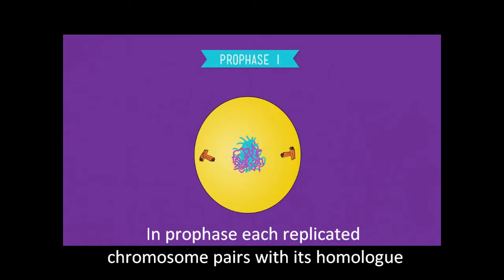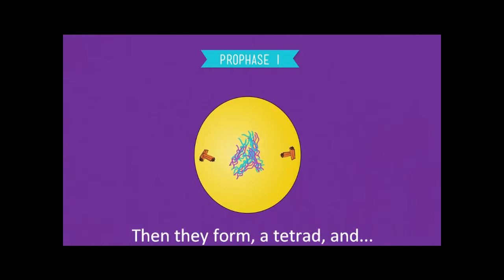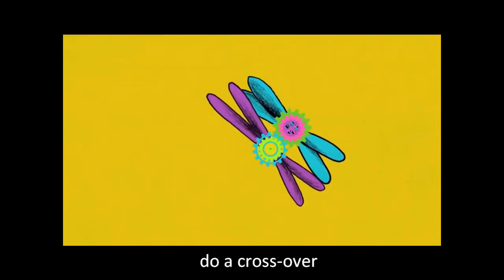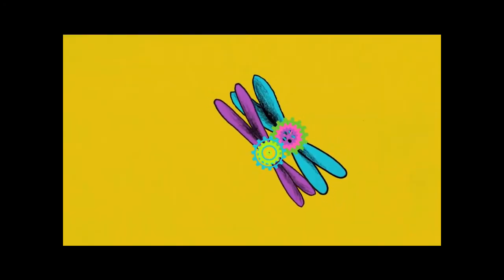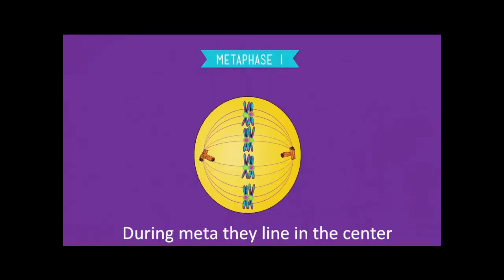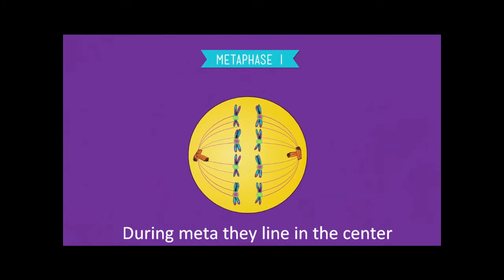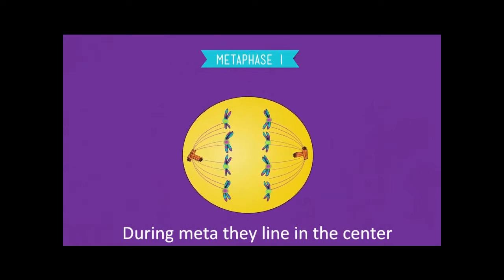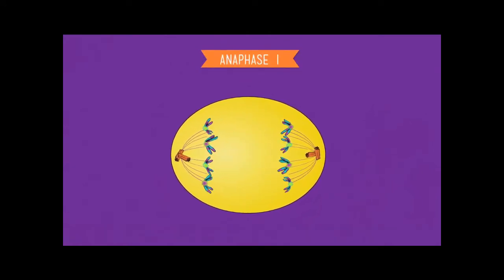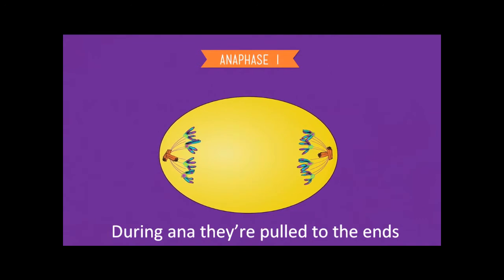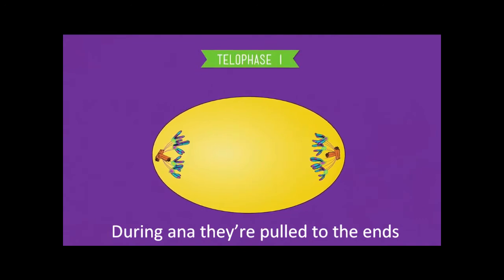In prophase, replicated chromosomes align and form a tetrad, then crossing over occurs. During metaphase, chromosomes line up in the center. During anaphase, chromosomes move to the ends of the cell.